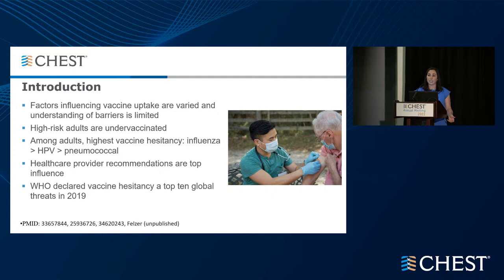Our high-risk adults — typically considered adults age 18 to 64 with pre-existing conditions, either immunocompetent or immunocompromised — are highly under-vaccinated. Among adults, there is significant vaccine hesitancy, primarily in influenza vaccine, followed by HPV vaccine and then pneumococcal vaccine. Multiple studies have shown that providers can make a significant impact on vaccinations, and patients often cite provider recommendations as a top reason for why they received a vaccination. In 2019, WHO declared vaccine hesitancy a top 10 global threat.